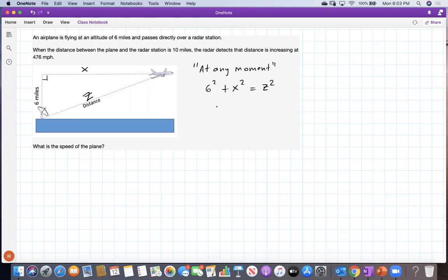Next, we should take derivatives on both sides of this equation. Derivatives with respect to t: derivative of six squared, which is just 36, plus x squared. And derivative with respect to time of z squared. Now, derivative of the constant function 36 is zero.